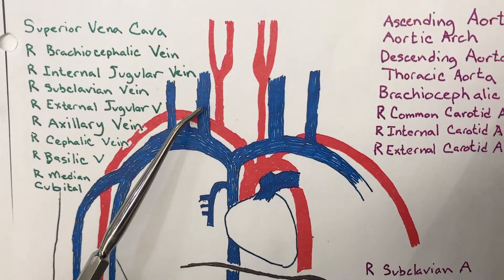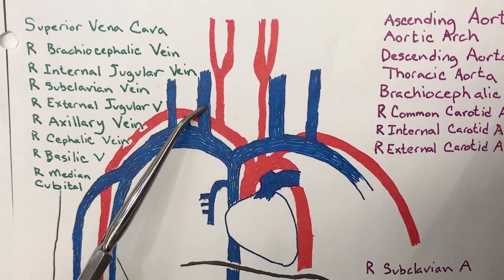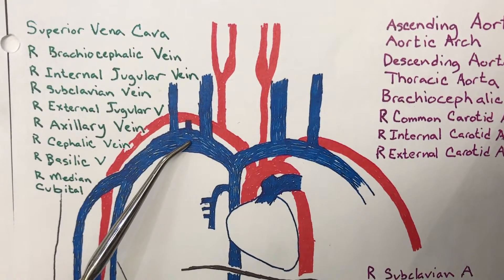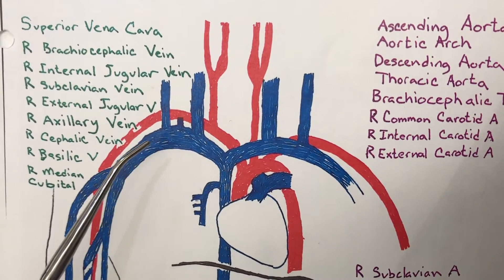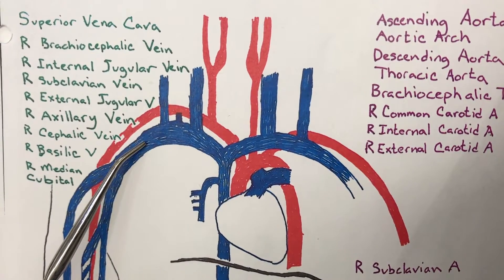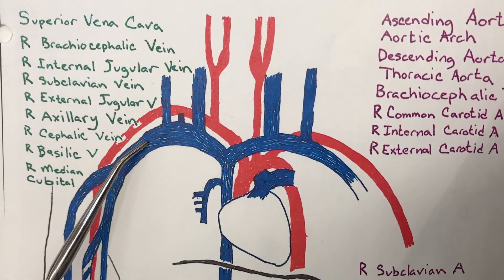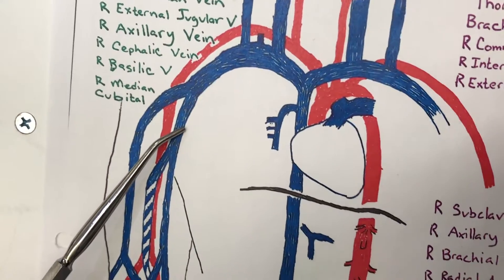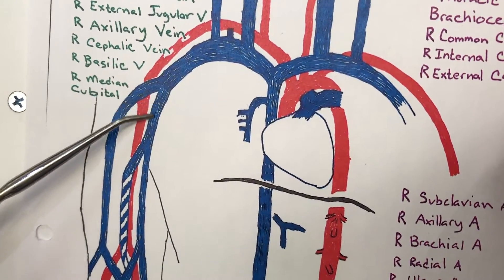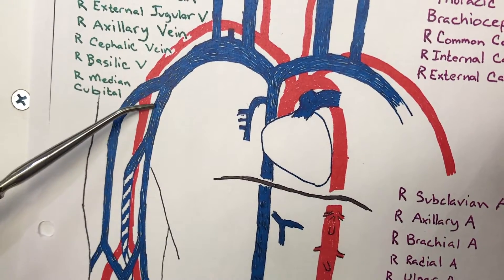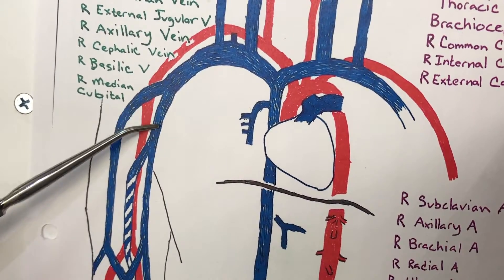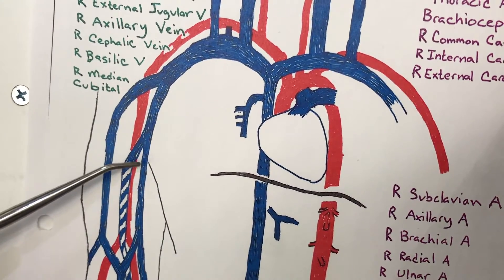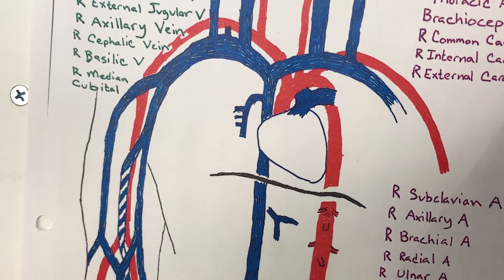This is your right internal jugular vein, right external jugular vein. This is your right subclavian vein, and this is your right axillary vein. As you go down the arm, this is your right brachial vein, and that gives rise to the basilic and the cephalic.